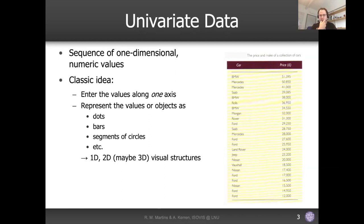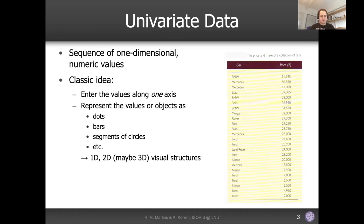An example is a dataset of car prices — each column by itself is univariate data. The classic idea is that you arrange the values along one axis and represent them as dots, bars, circle segments, or similar marks. This can be done with 1D or 2D visual structures, and sometimes even 3D, but most of the time just 1D or 2D.